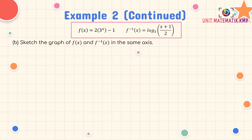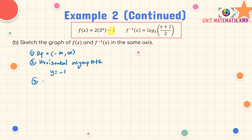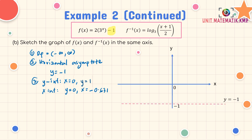Part B: sketch the graph of f(x) and f⁻¹(x) on the same axis. The domain of f is negative infinity to infinity as it is an exponential function. The horizontal asymptote is at y = −1. The y-intercept: when x = 0, y = 1. The x-intercept: when y = 0, x = −0.631. Plot the points and sketch the curve for f(x).